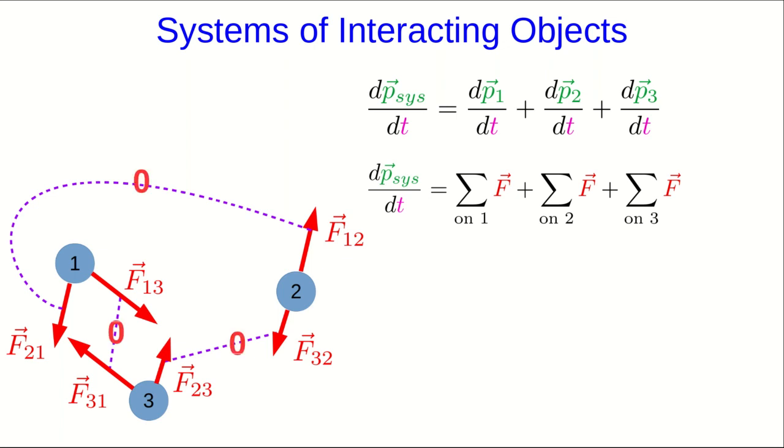Now, notice we know that those are all interaction pairs, and so they pair up and add to zero. And so this is just another way of seeing something which we already know, which is that the momentum of an isolated system is constant.